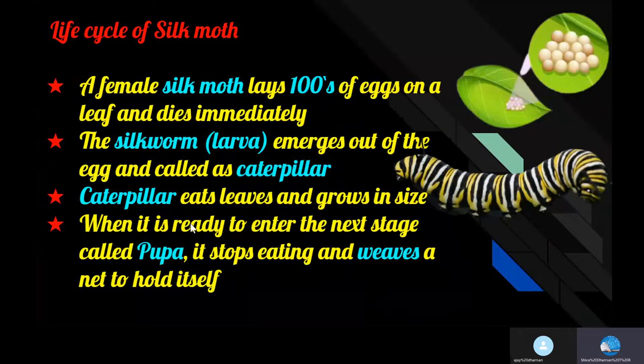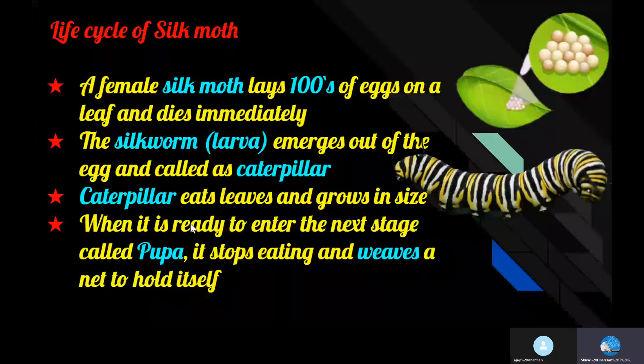Life cycle of a silkworm. The life cycle of a silkworm has four stages: the egg, larva, pupa, and moth.